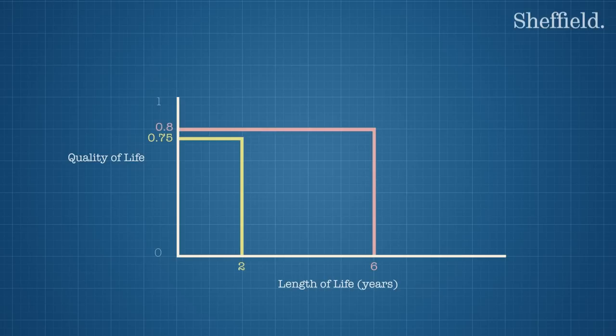With the existing treatment, a patient can expect to live for 2 years at a quality of life valued as 0.75. 2 times 0.75 equals 1.5. Therefore the existing treatment has a total of 1.5 QALYs.